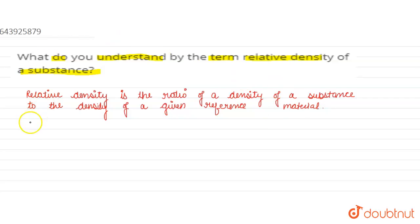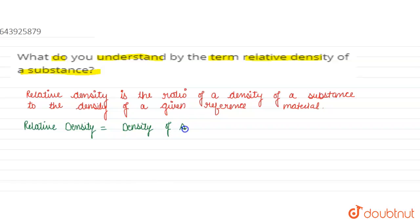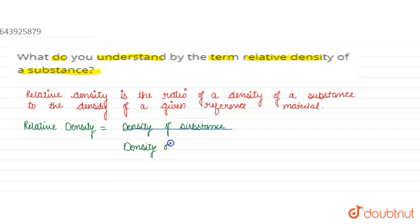We can write it as: Relative Density = Density of Substance / Density of Reference Material.